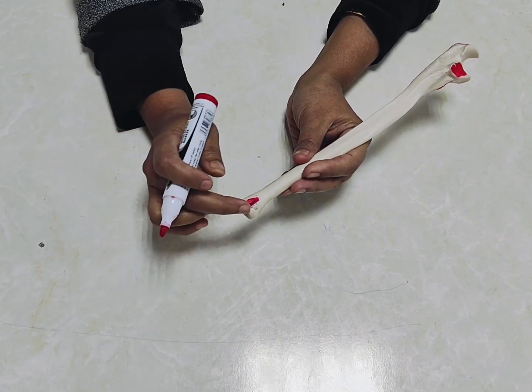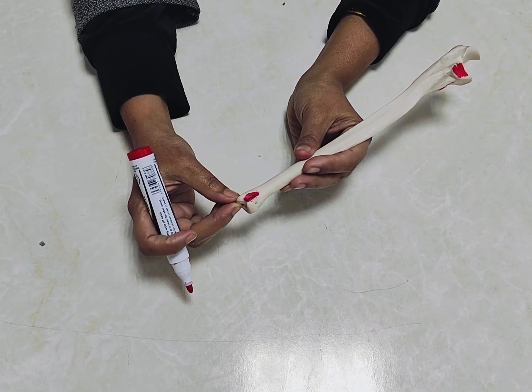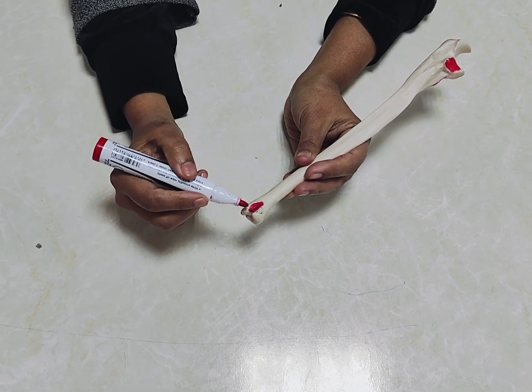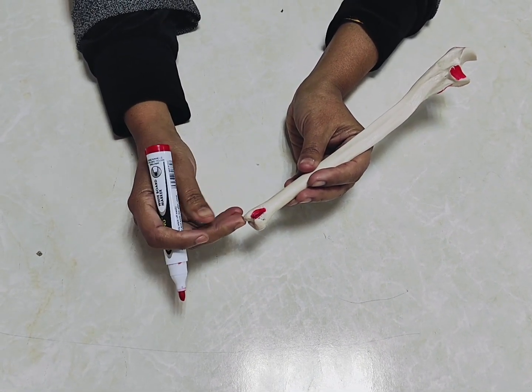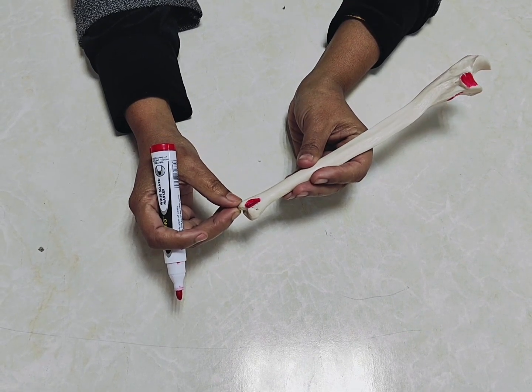In the lower end, there is a groove between head of the ulna and styloid process of the ulna. We may mark here and ask you what tendon passes through here. You have to say extensor carpi ulnaris tendon will be passing through here.